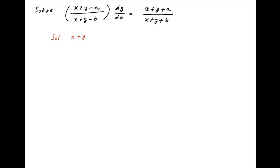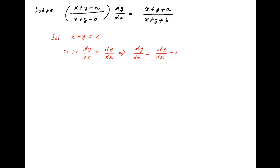We start by putting x plus y equal to z. Taking the derivative of both sides with respect to x, we get 1 plus dy upon dx is equal to dz upon dx, which implies that dy upon dx is equal to dz upon dx minus 1.